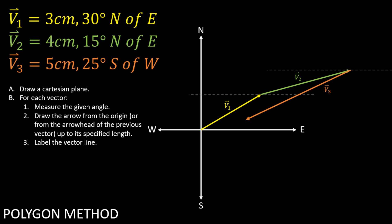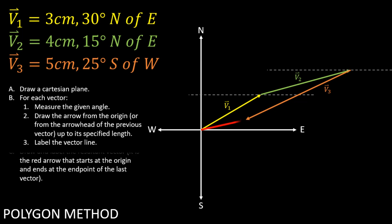Now that you have plotted the three given vectors, you may already delineate your resultant vector, which represents the total displacement of your object. Do this by drawing an arrow from the origin to the endpoint or arrowhead of the last vector that you drew.